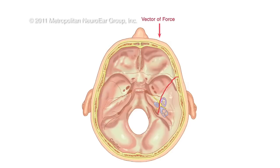If the impact or the blow to the head occurs from the front or from the back, you can develop a fracture line directly through the petrous pyramid. This is a much more severe condition. These patients usually have loss of consciousness, have severe brain injury. The fracture line goes right through the petrous pyramid, right through the inner ear. Facial paralysis and total hearing loss are common.